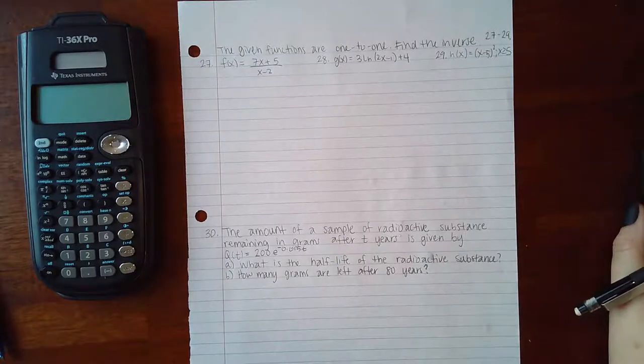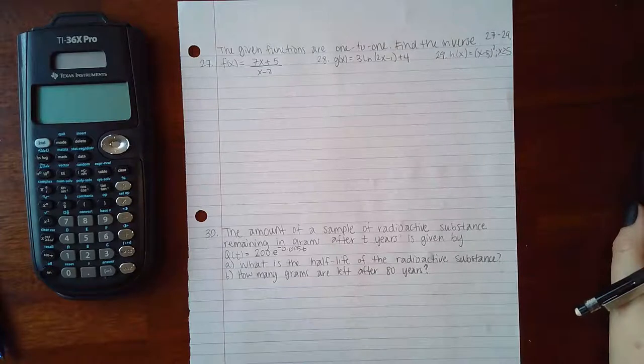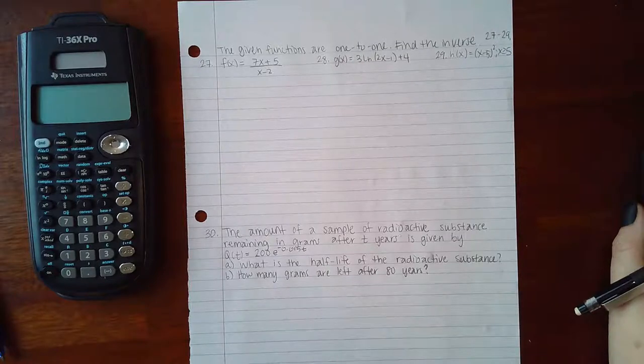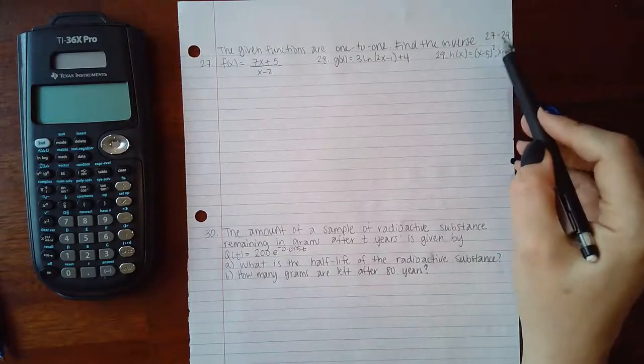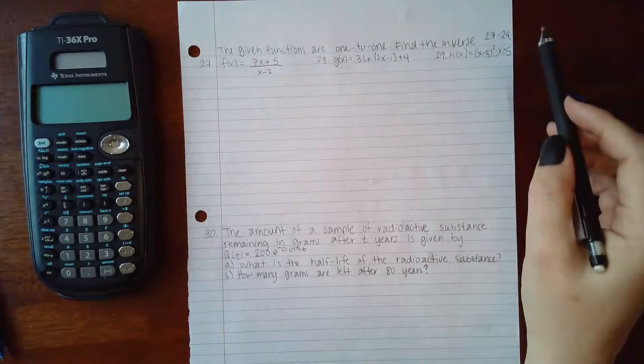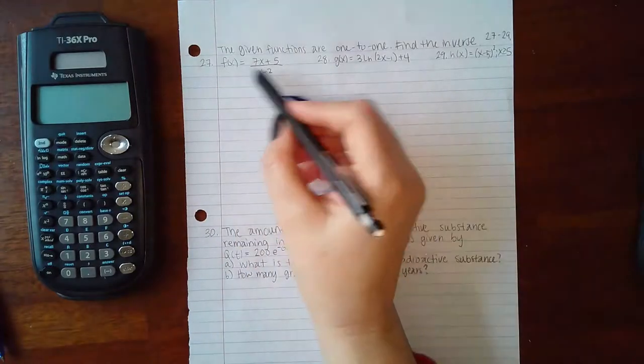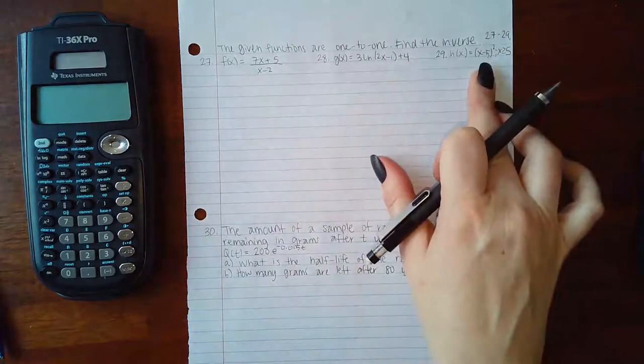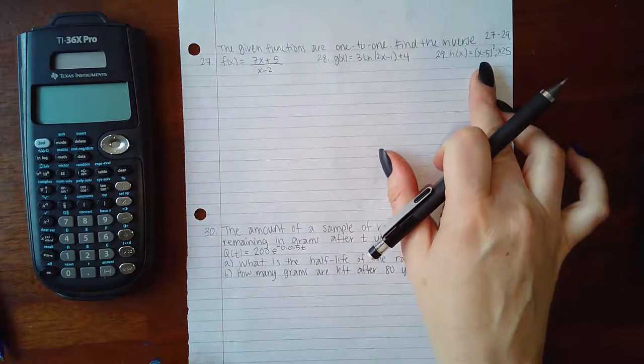Okay, here we're going to be doing problems 27 through 30. The directions say the given functions are one-to-one, find the inverse, and this is for all problems 27 through 29. So they're telling me that all three of these are one-to-one functions, and I need to find the inverse.